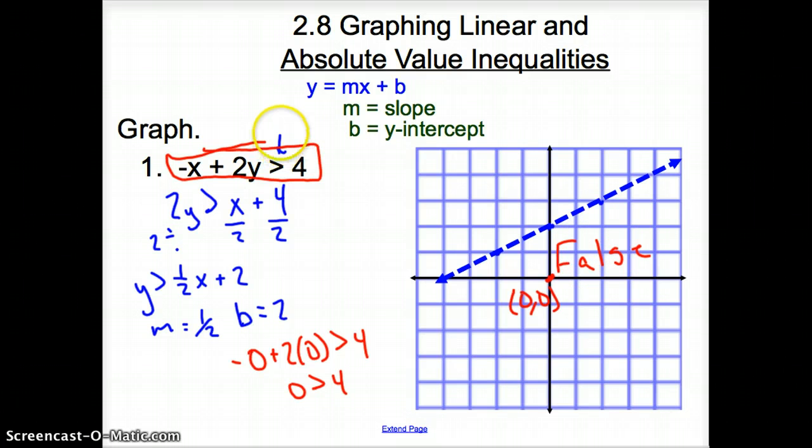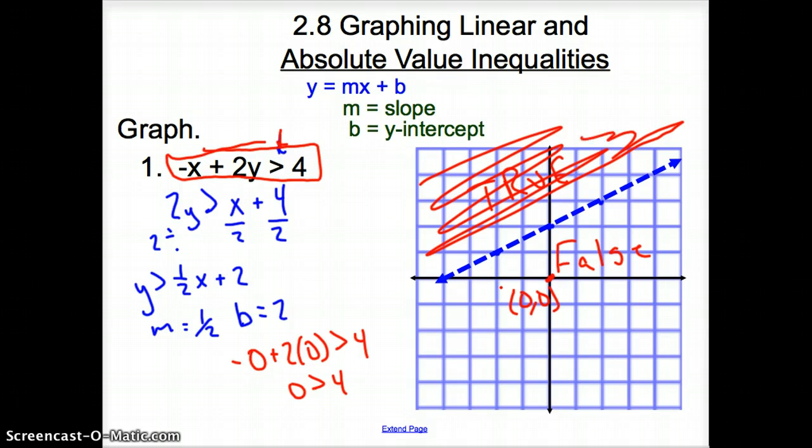When we have inequalities, when we have that guy, we want to shade. We always want to shade the true side. So, if this side all the way down here is false, this side must be true. Yes? So, we want to shade the true side. So, now when we shade, we shade everything over or above that line because it's the true side.